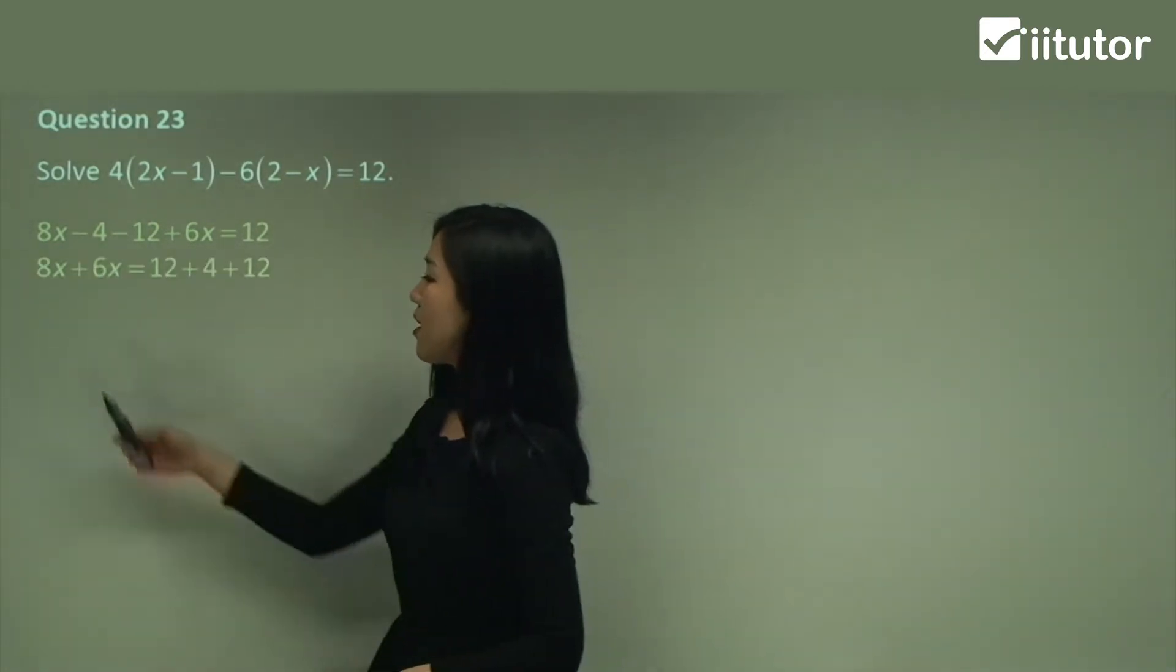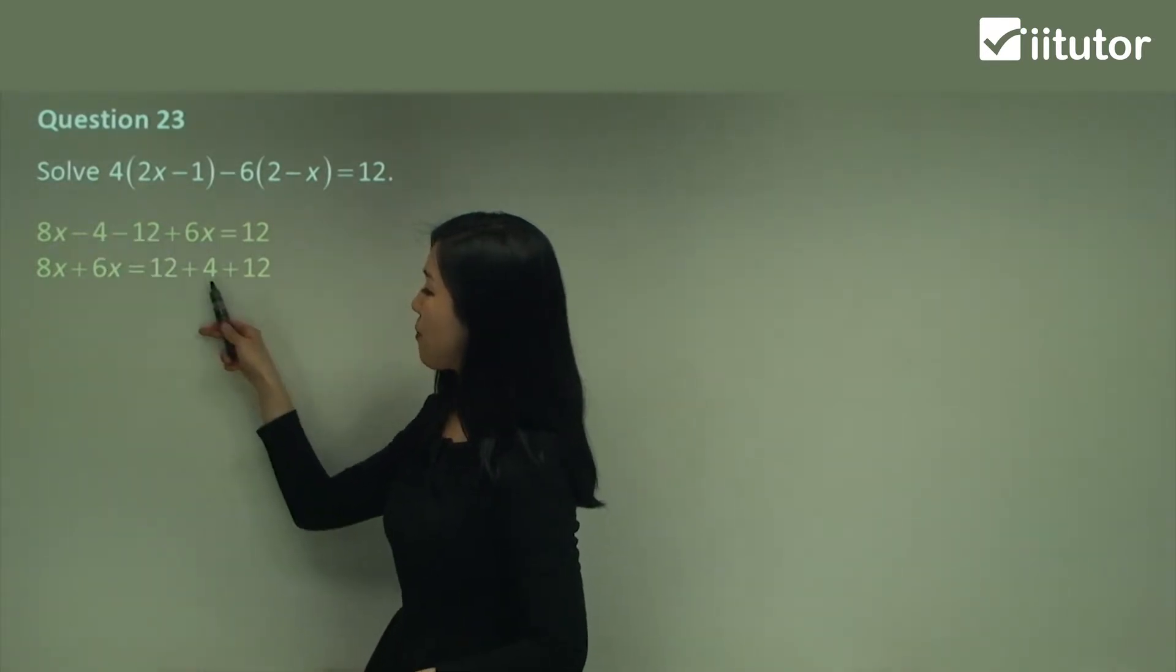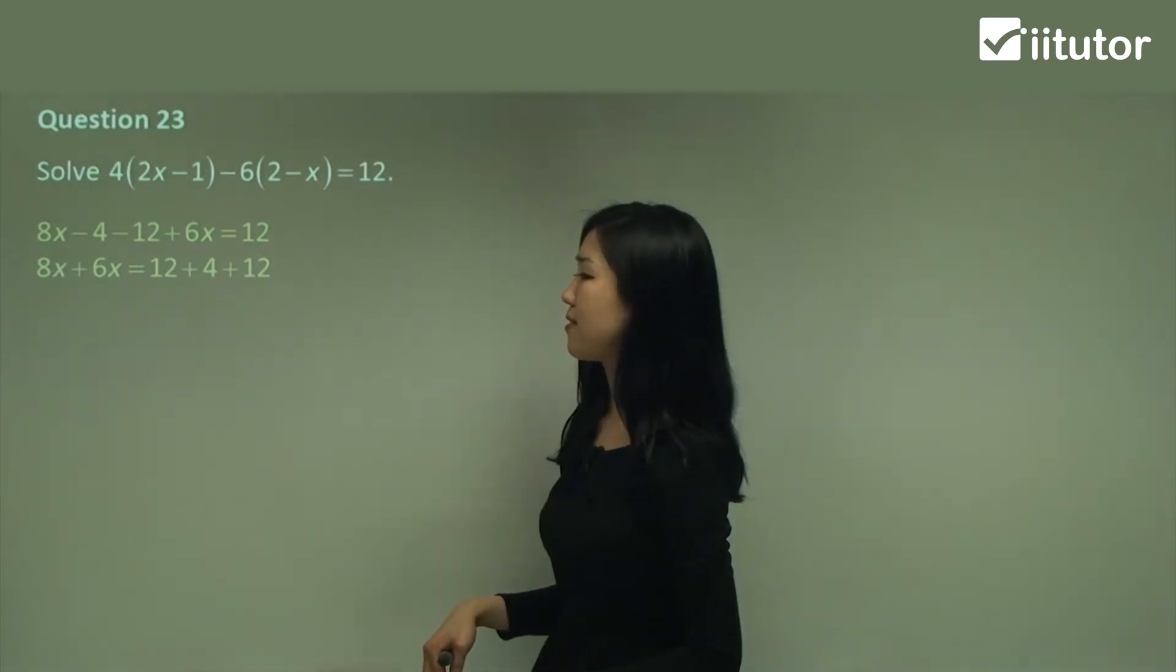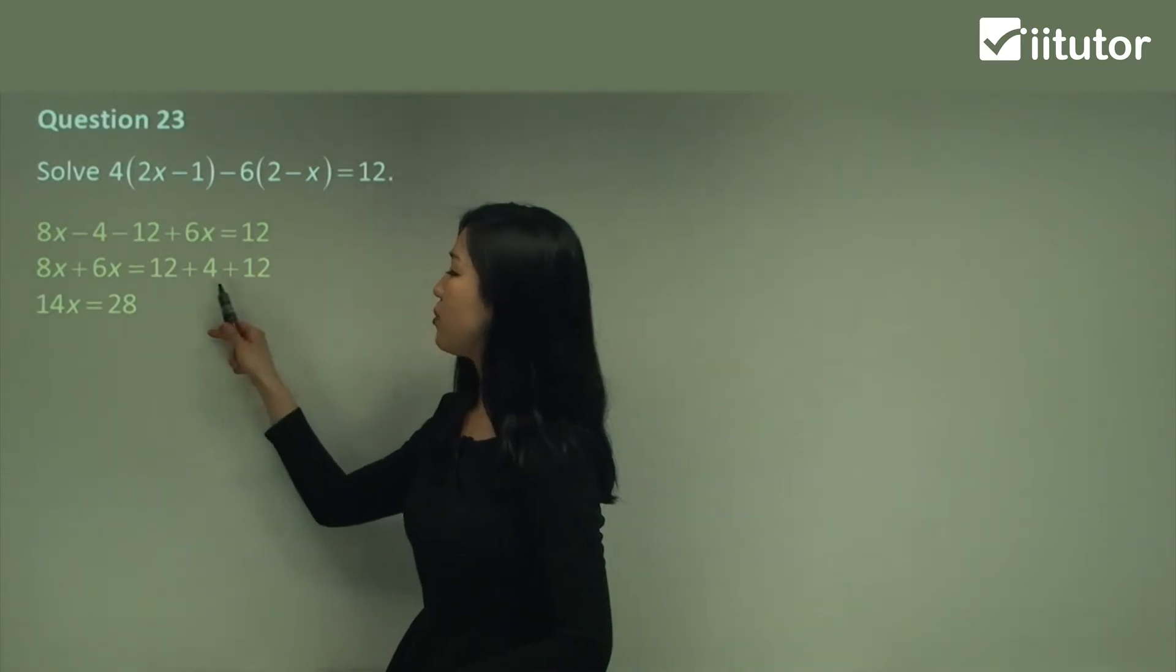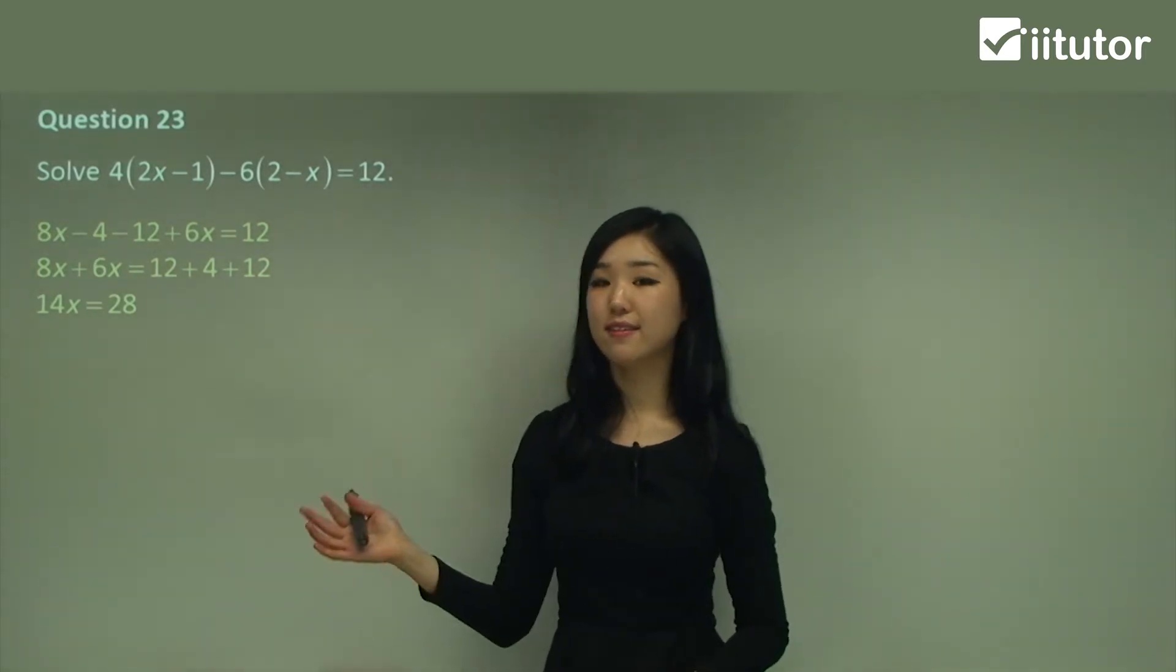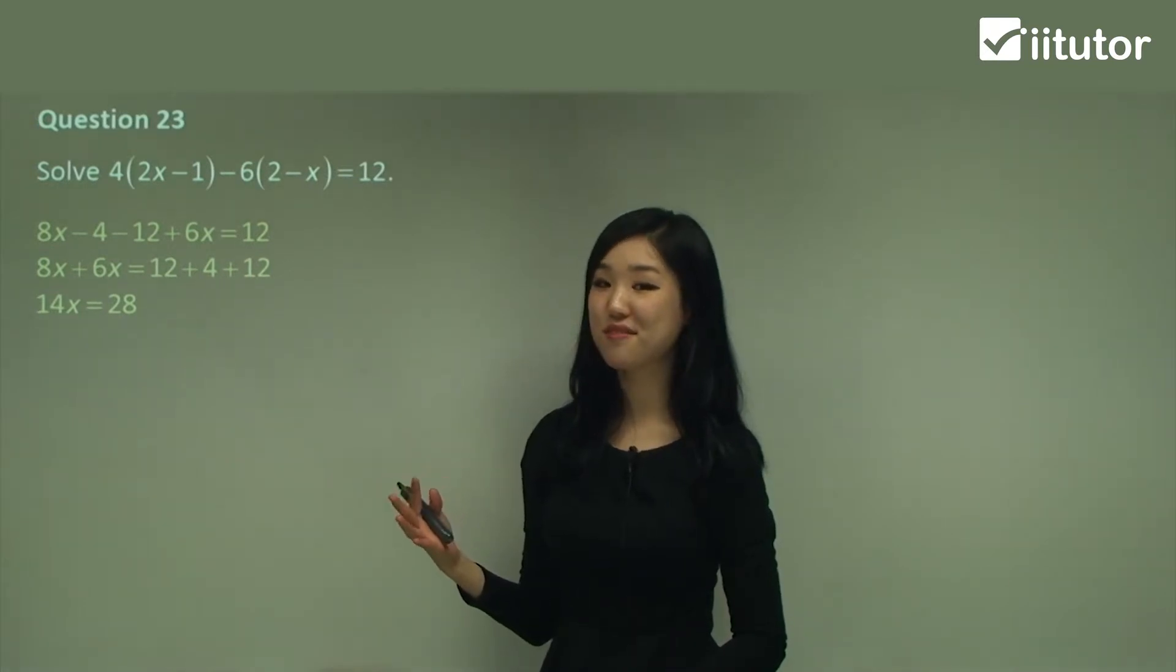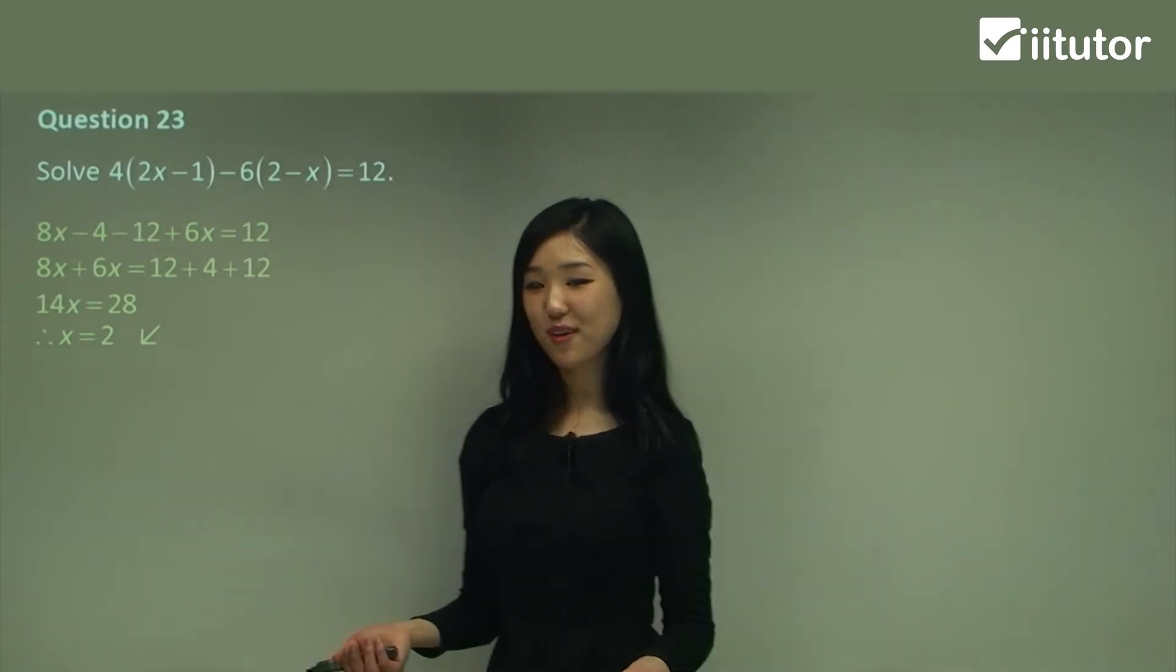Gather your like terms. So 8x plus 6x on the left. The negative 4 becomes a positive 4. Negative 12 becomes a positive 12. Move it all onto the right. And you can see that 8 plus 6 is 14. 12 plus 4 plus 12 is 28. So to get rid of that 14 we simply need to divide. So 28 divided by 14 is 2. So x is 2.